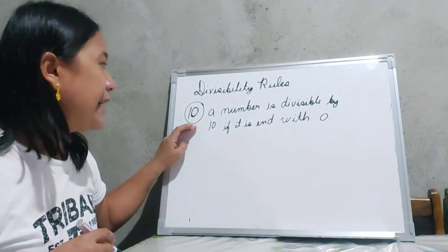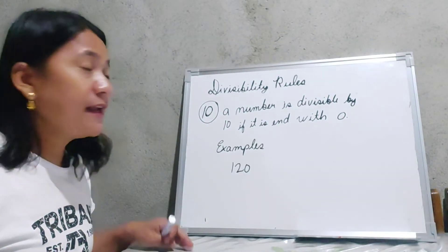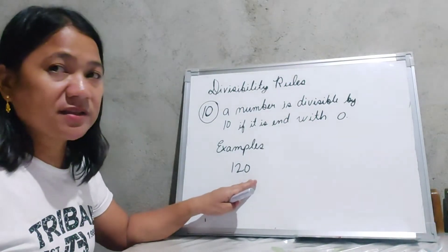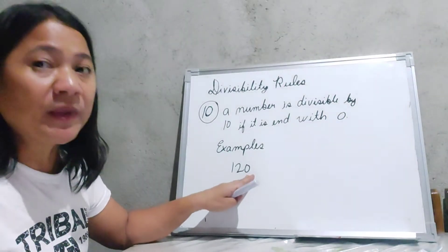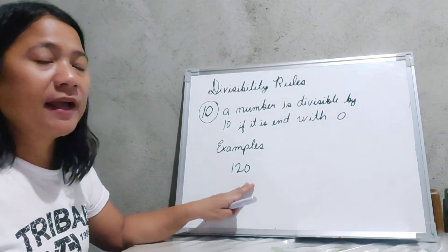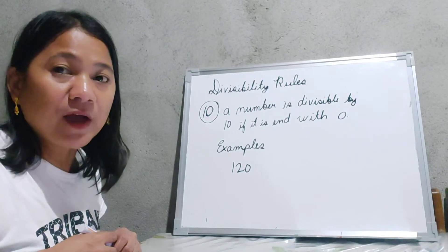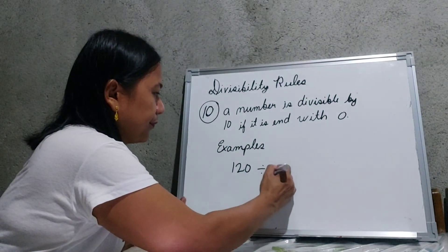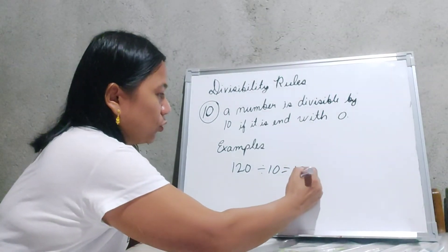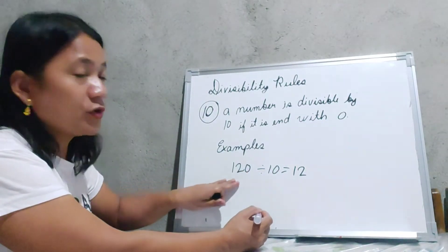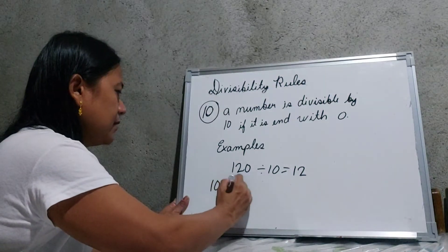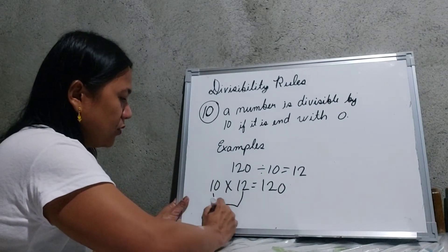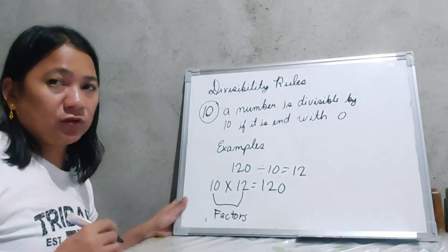The last divisibility rule we have is for 10. A number is divisible by 10 if it ends with 0. Let us apply the rule to 120. Since 120 ends with 0, it is automatically divisible by 10. Let us find the factors of 120 by dividing 120 by 10, which gives us 12. So 10 and 12 are the factors of 120, because 10 times 12 gives us 120.